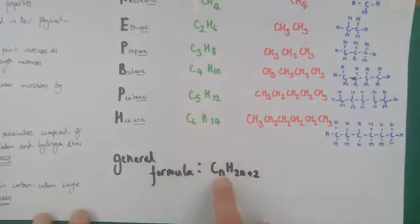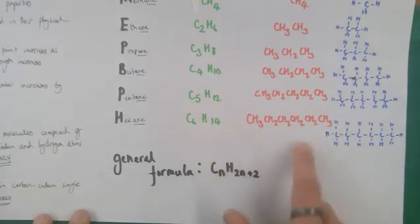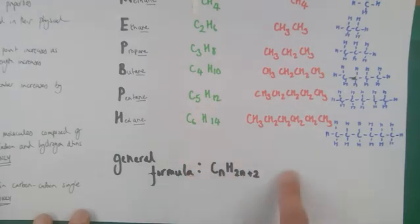C to the n, the carbons is 6, C6. H2 times 6 plus 2, 2n plus 2, 2 times 6 is 12, plus 2 is 14. So I can work out any alkane formula I like using the general formula, algebraic expression, to generate that formula, and it will work perfectly every single time.